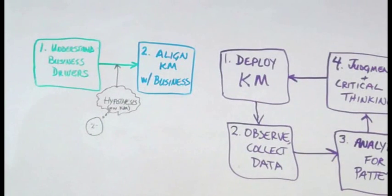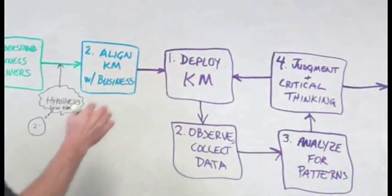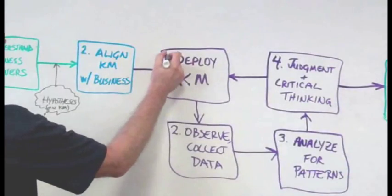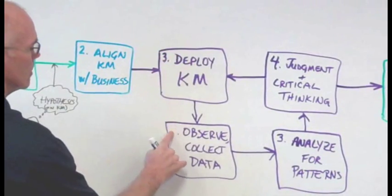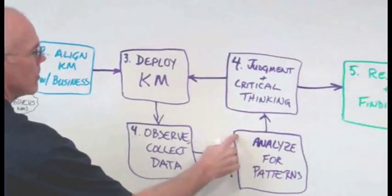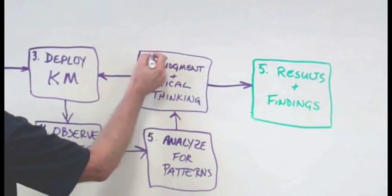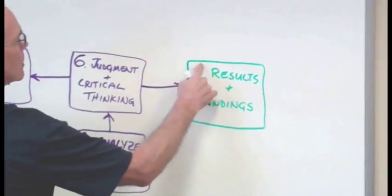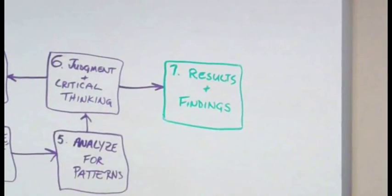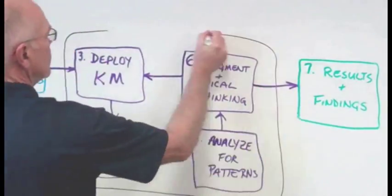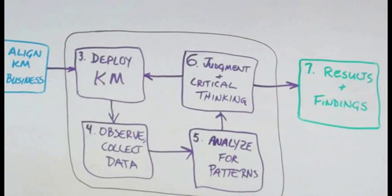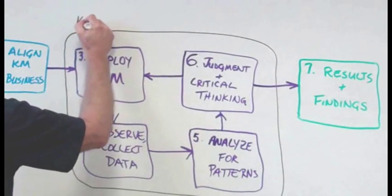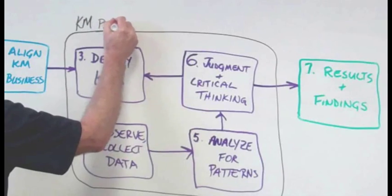Then, after ensuring this strategic alignment, you proceed to the old step one, which has now become step three. Then steps three, four, and five, and six become an iterative little loop until you obtain results and see how well they match your expected outcomes. And we'll call this little four-step loop a process within a process, and we'll call it the KM program feedback loop.